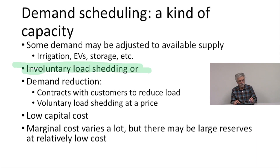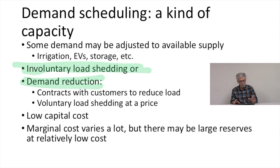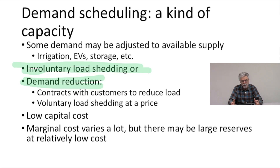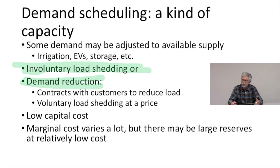We could think about managing demand by obtaining demand reduction voluntarily. We could think about having contracts with customers to reduce load at particular times — voluntary load shedding at a price. So we have contracts with some of our large users that if we need them to reduce their load in order to balance supply and demand on the grid, they'll agree to do so at a given contract price.